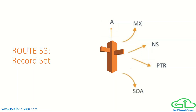The SOA, or Start of Authority record, appears at the beginning of a DNS zone file and indicates the authoritative name server for the current DNS zone, contact details for the domain administrator, the domain serial number, and information on how frequently DNS information for this zone should be refreshed.